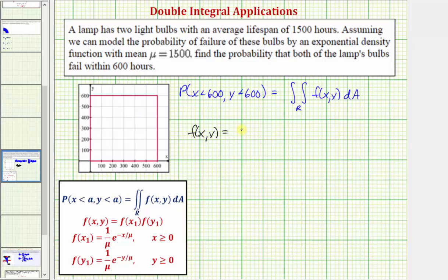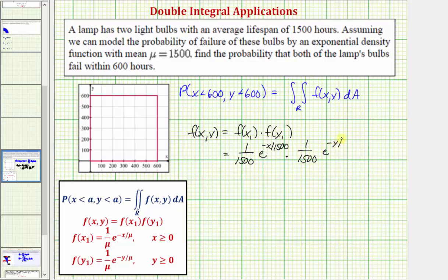f(x, y) is equal to f₁(x) times f₁(y), where f₁(x) is 1/1,500 times e raised to the power of negative x divided by 1,500, times f₁(y), which is 1/1,500 times e raised to the power of negative y divided by 1,500. Multiplying the coefficients, we have f(x, y) equals 1/2,250,000 times e^(−x/1500) times e^(−y/1500).